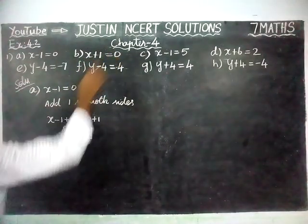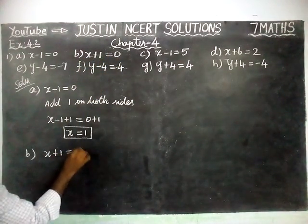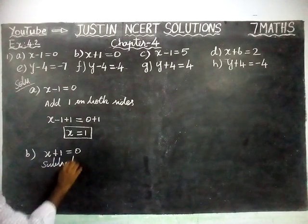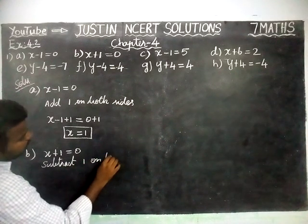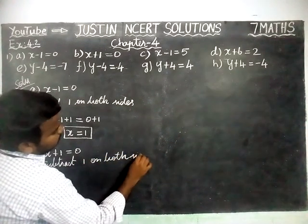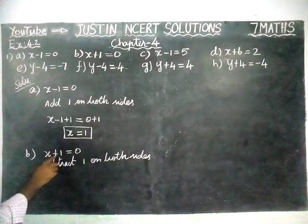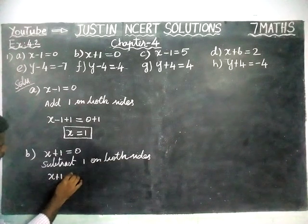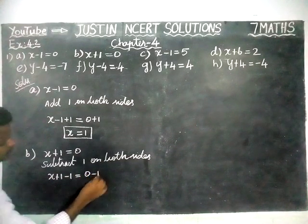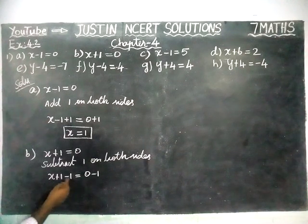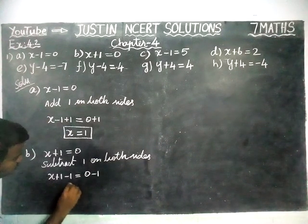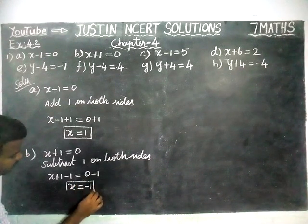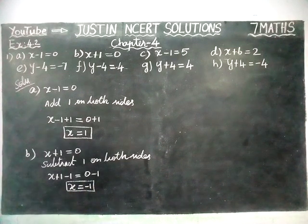Next option B: x plus 1 equal to 0. We are going to subtract 1 on both sides, because here we have plus 1 and we have to cancel this by subtracting 1. So x plus 1 minus 1 is equal to 0 minus 1. Plus 1 minus 1 cancelled, so x is equal to 0 minus 1 equal to minus 1. The value of x is equal to minus 1.